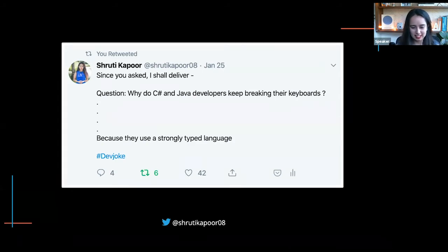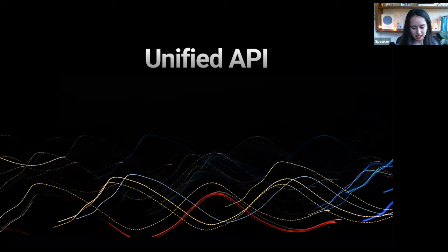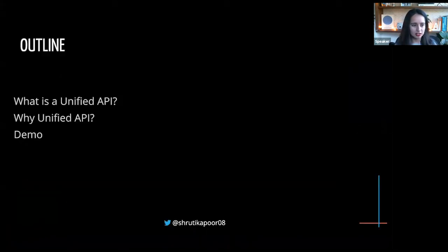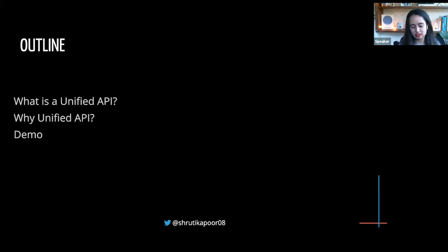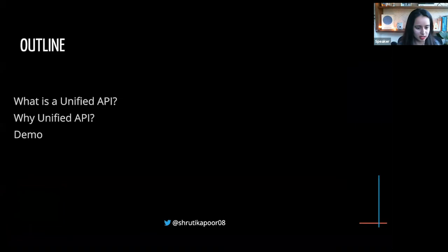But let's get started today. I'm going to be talking about unified API, and the talk is mainly going to be divided into three main topics: I'll talk about what is a unified API, why unified API with GraphQL, and then I'll show you a demo of how to build a unified API using Hasura, combining a REST API and a GraphQL API.